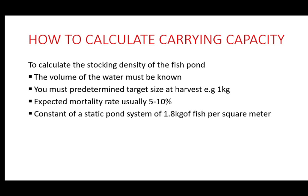To calculate carrying capacity, you must have certain information on hand. First, you must know the volume of water in your pond. Secondly, you must determine a target size at harvest — for example, you want to target 1 kg fish at the end of four to five months. Third, the expected mortality rate — usually five to ten percent. And then we have a constant for a static pond system: 1.8 kg of fish per square meter.